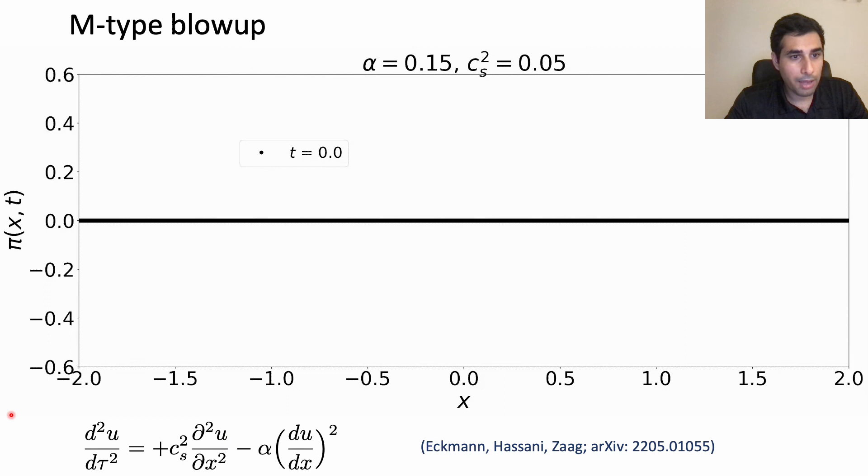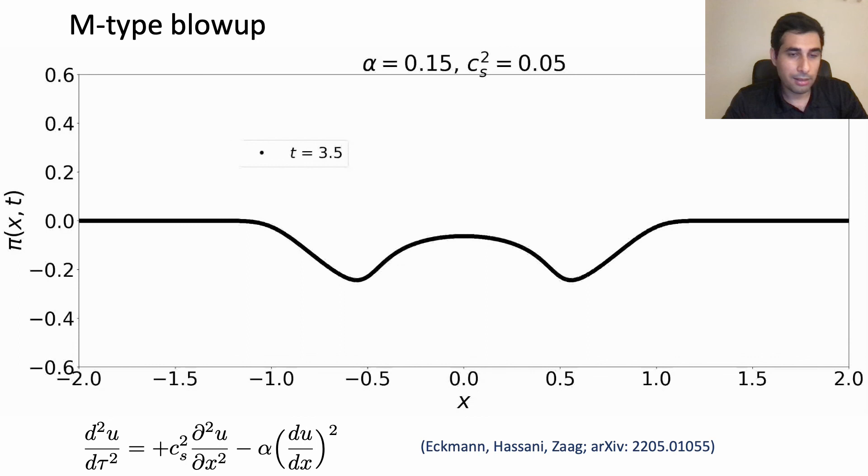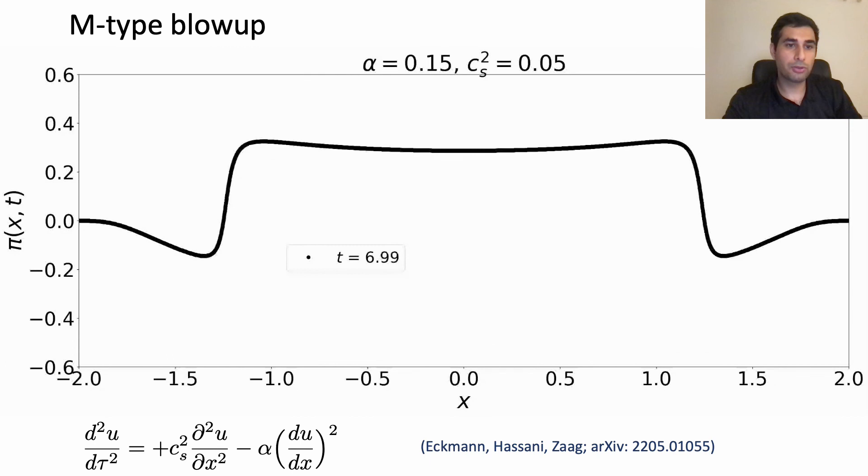And this is a counter-intuitive result especially compared to what we see in cosmological simulations. And the way that this blow up happens is like this that I'm going to show in this animation. The minimum becomes sharper because of this non-linear term, however at some point the Laplace term dominates and the minimum turns into a maximum.